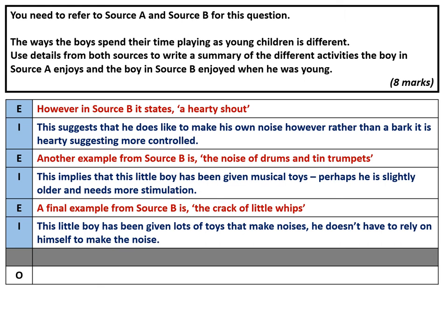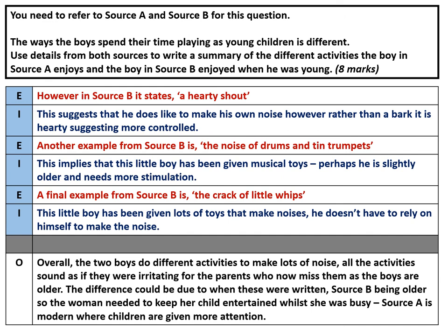So I've put all my evidence and inference into my grid. I now need to make my overall statement. 'Overall' — so I'm signalling to the examiner this is my final thing — 'the two boys do different activities to make lots of noise. All the activities sound as if they were irritating for the parents who now miss them as the boys are older. The difference could be due to when these were written — source B being older, so the woman needed to keep her child entertained while she was busy. Source A is modern, where children are given more attention.' That is my entire response.